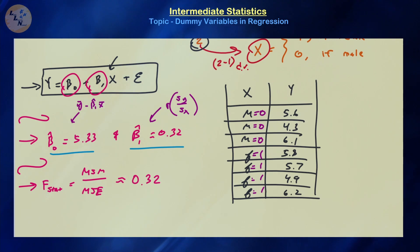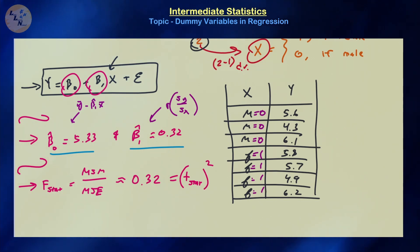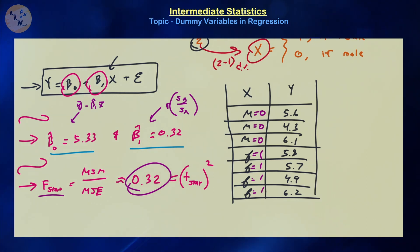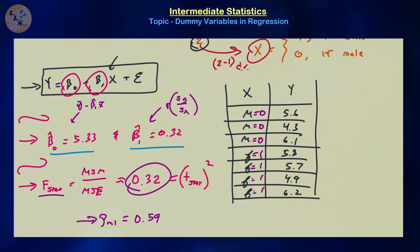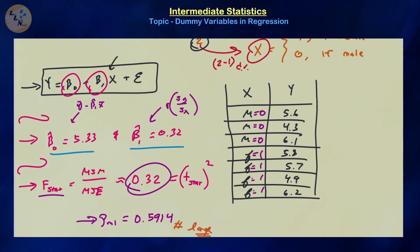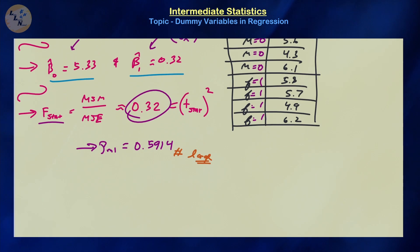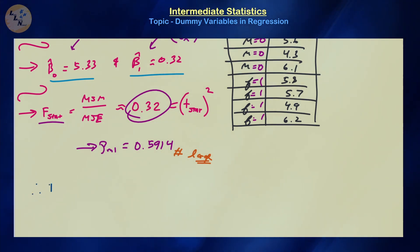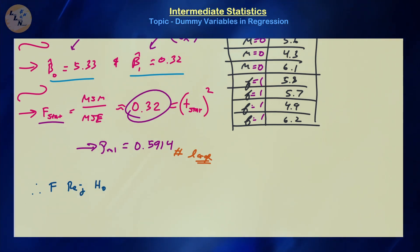Since we're working in the simple linear regression model, remember that the F-test statistic equals the t-distribution test statistic squared. The p-value is approximately 0.5914, which in most scenarios is considered large. Most people use an alpha of 0.05, and 0.5914 is substantially larger than 5%, so our p-value is not less than a typical alpha value. Therefore we fail to reject the null hypothesis.